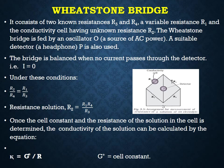The Wheatstone bridge consists of two known resistances R3 and R4, a variable resistance R1, and the conductivity cell having unknown resistance R2. The Wheatstone bridge is fed by an oscillator O, which is a source of AC power. A suitable detector, a headphone P, is also used. The bridge is balanced when no current passes through the detector, that is i is equal to 0. Under the balance condition of the bridge, R2 by R4 is equal to R1 by R3, so the resistance of the solution R2 is equal to R1 multiplied by R4 divided by R3.